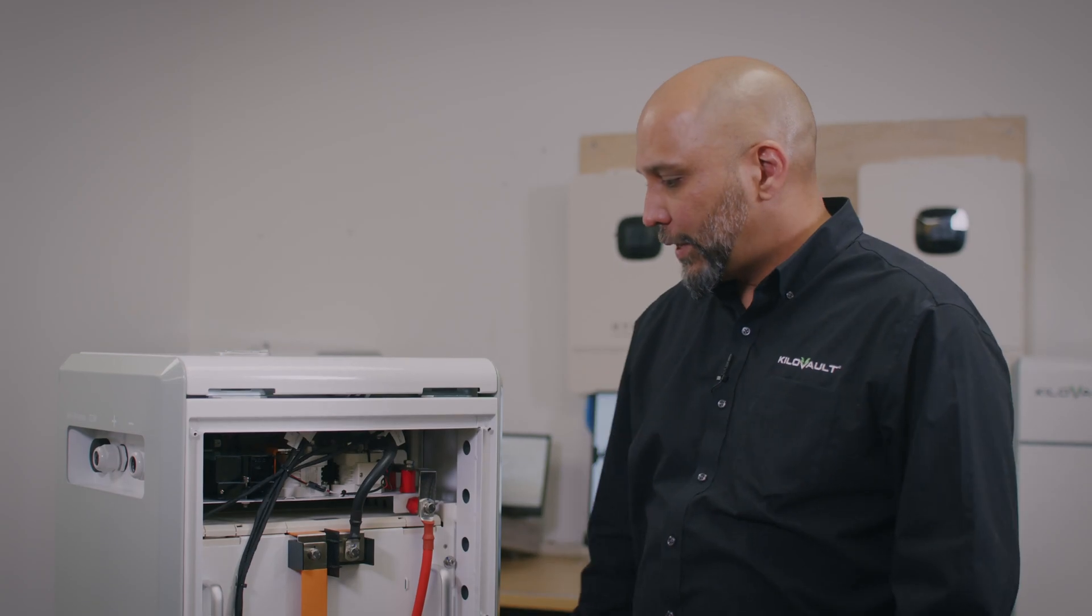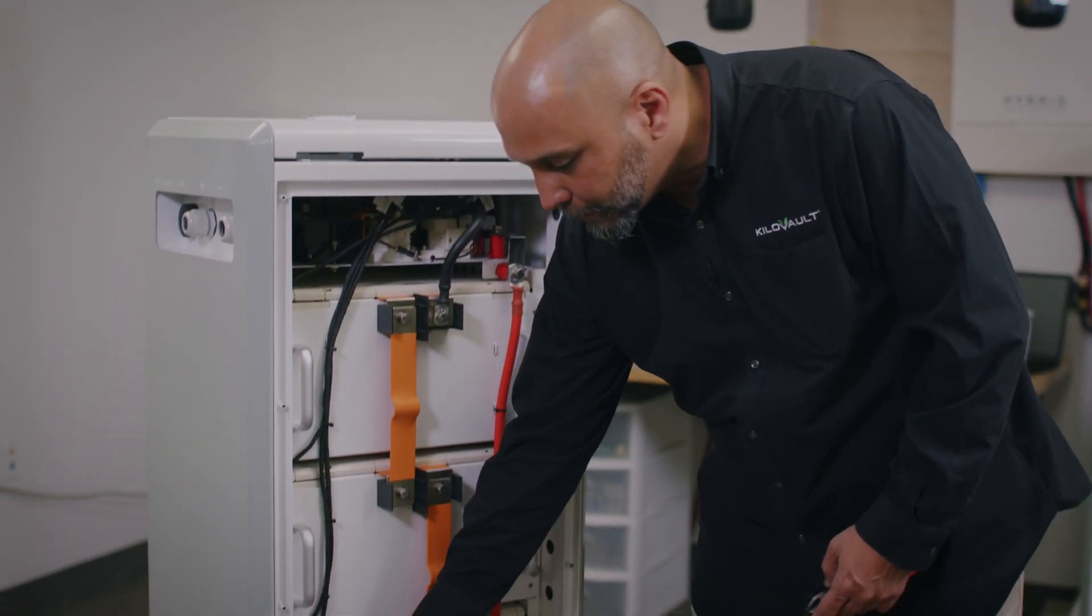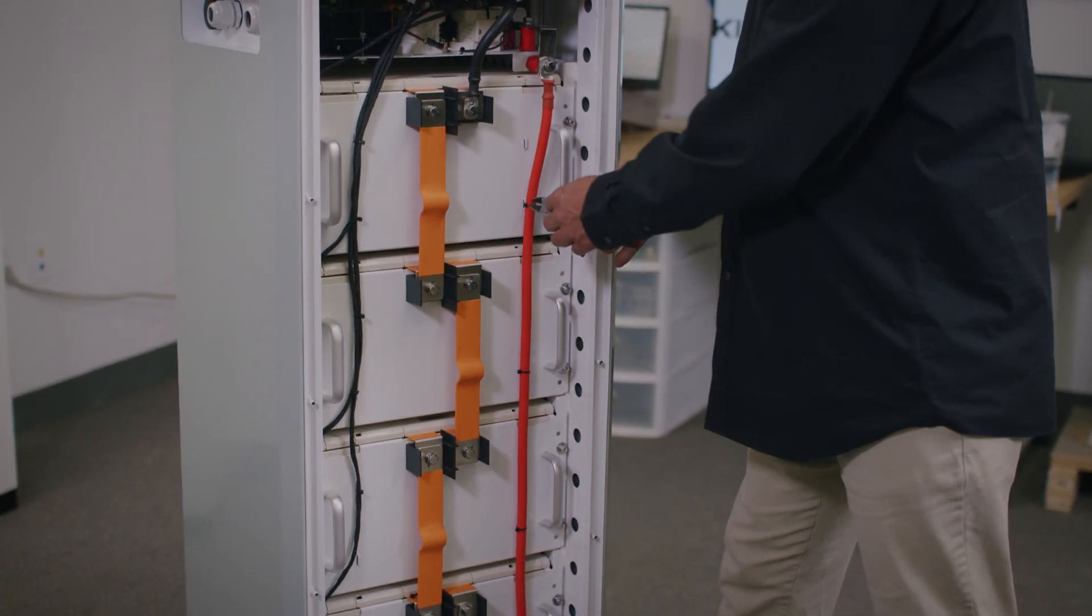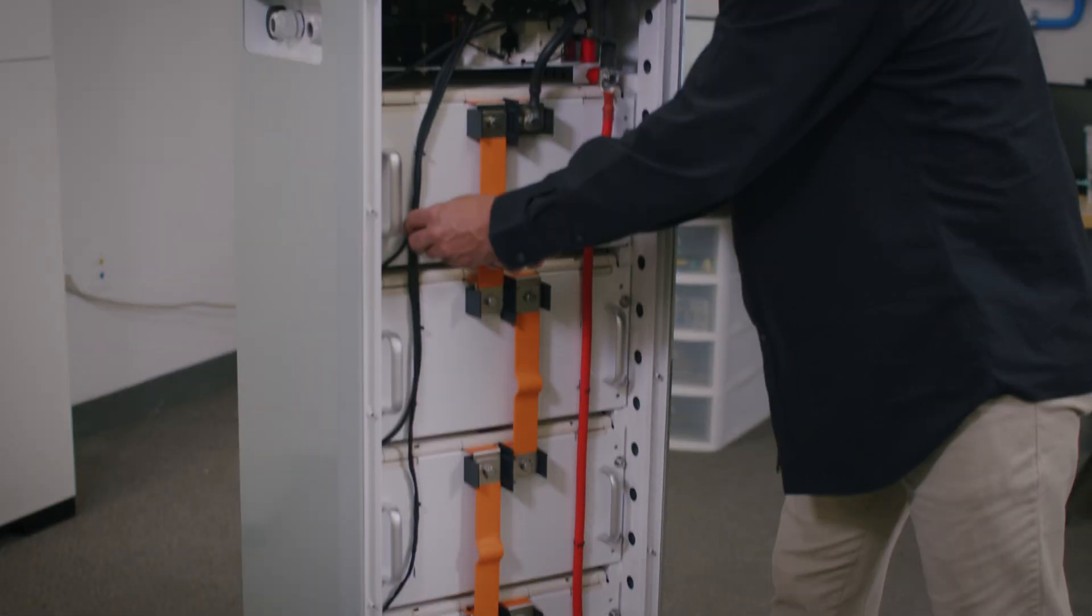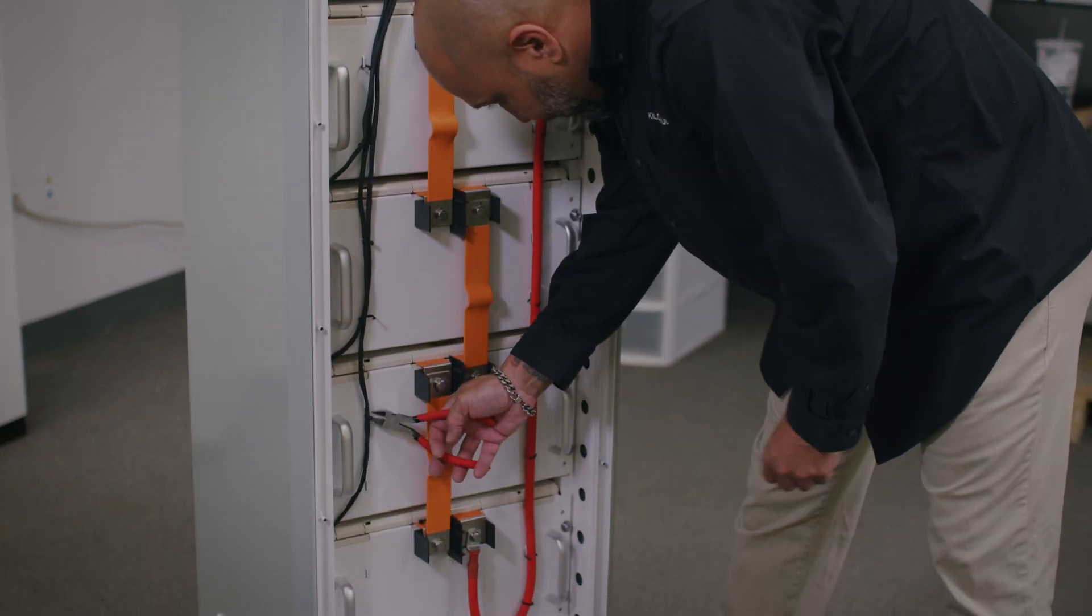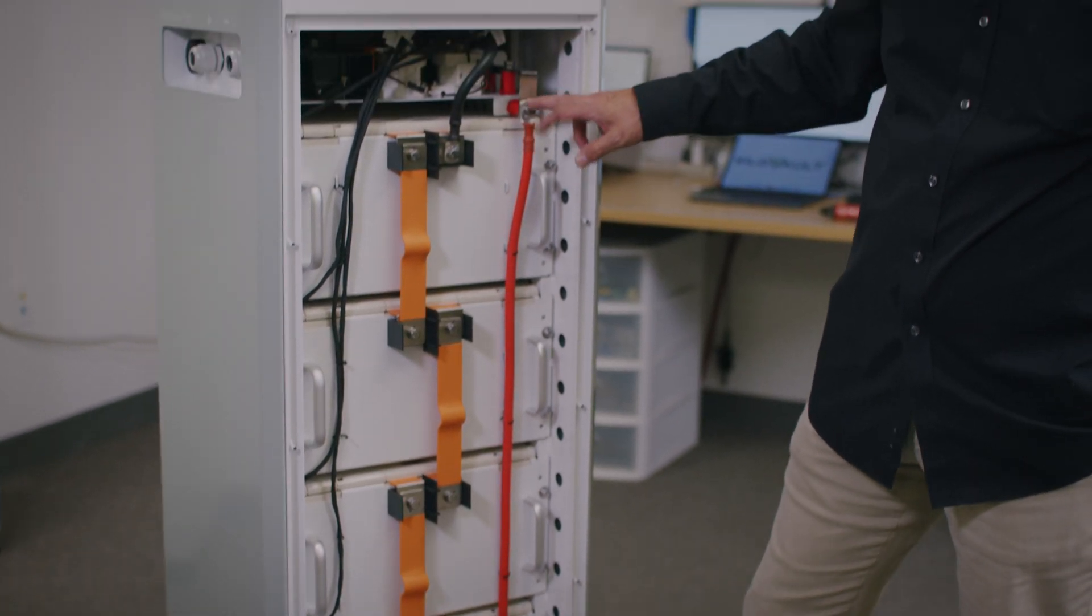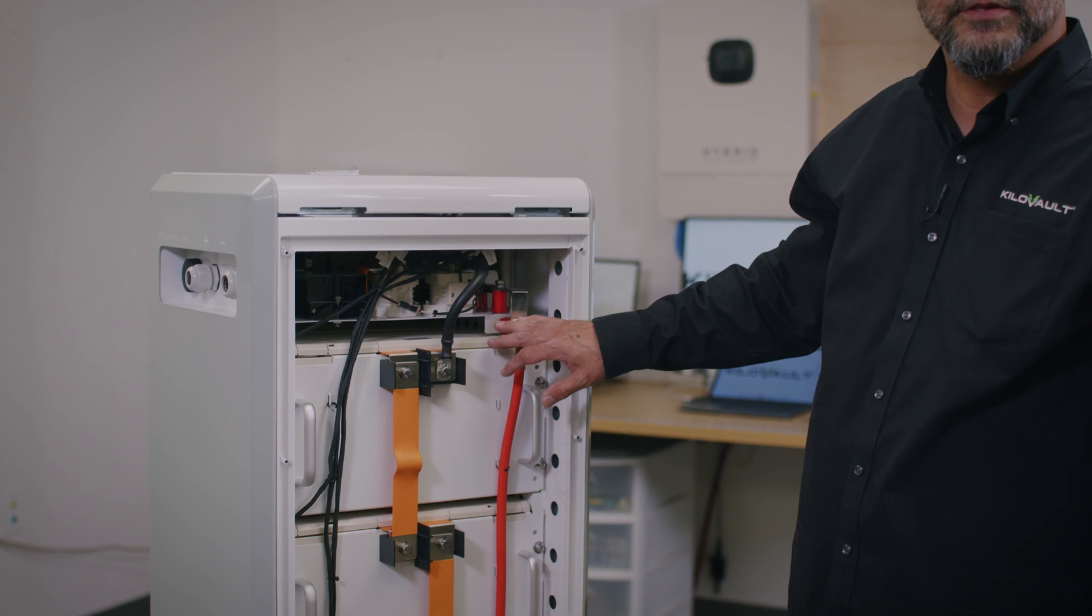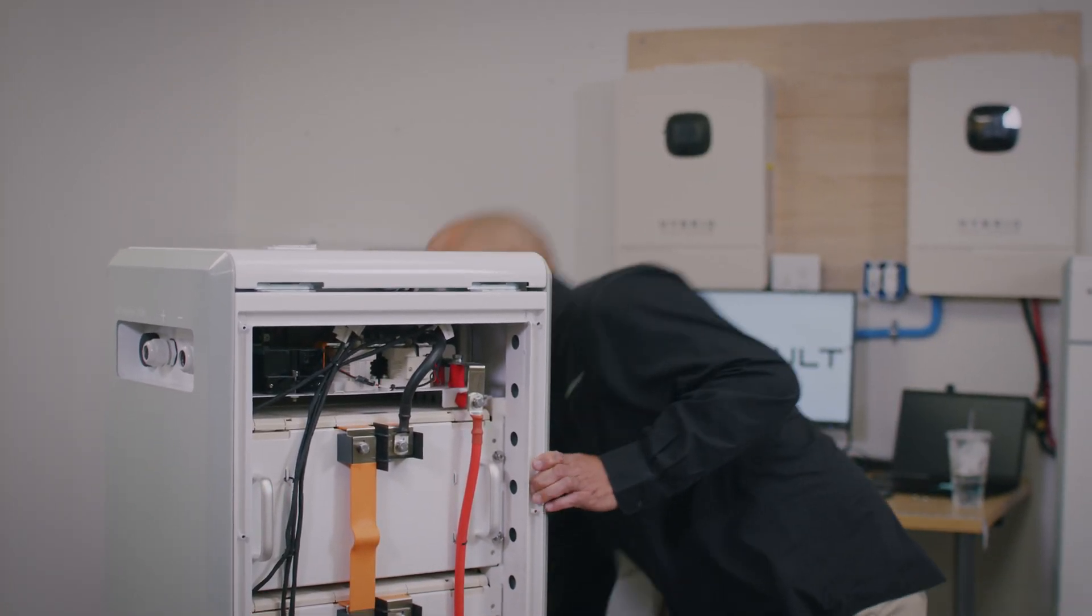Next we're going to remove all the tie wraps, these little tie wraps that are holding down all the cables. Go one by one and just slip them off. Next, we're going to disconnect the positive and negative terminals to make it safe to work on these units.